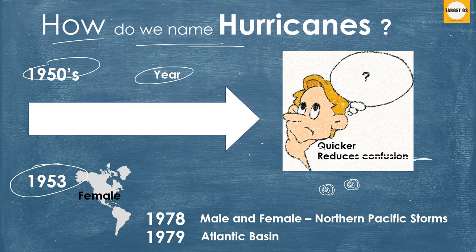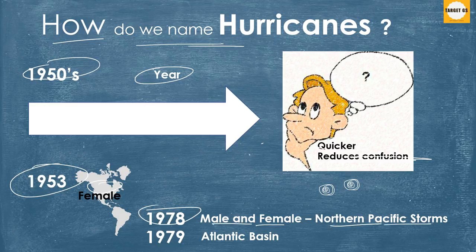In the year 1953, the United States began using female names for storms. By 1978, both male and female names were used to identify northern Pacific storms, and this was then adopted in 1979 for storms in the Atlantic basin.